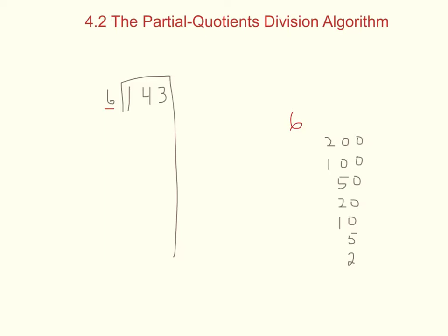We're going to multiply 6 by each one of these numbers on the chart. However, some of these won't be useful because they'll give us answers bigger than 143. Whenever we multiply our divisor by these numbers, the answers need to be less than the dividend — if not, it's too big and we don't need it.